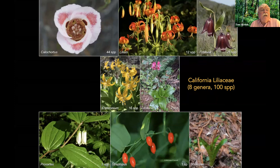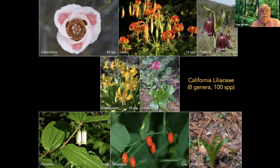Scoliopus, the slink pods, are sister to Prosartes, the fairy bells, and both are jointly sister to Streptopus, the twisted stalks. These three genera form a clade—the lineage formed by all descendants of their common ancestor. This clade, together with the genus Tricyrtis, the toad lilies of East Asia, and Calochortus, are in some pattern still not completely settled, the earliest divergent genera of Liliaceae, and are successively sister to all other members of the family.